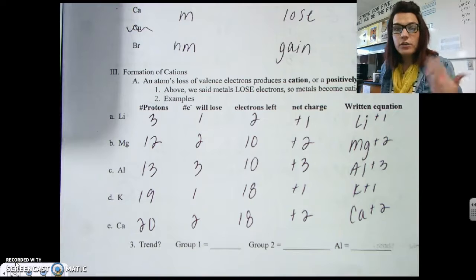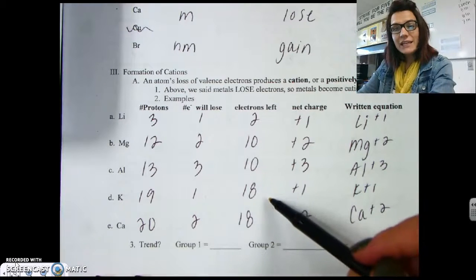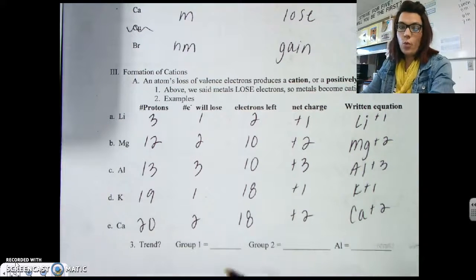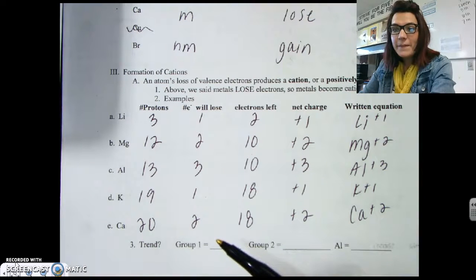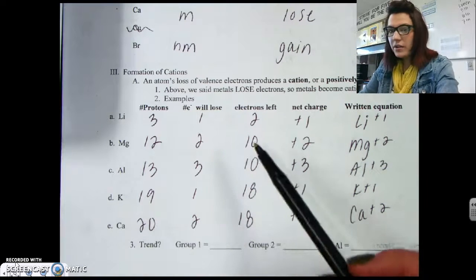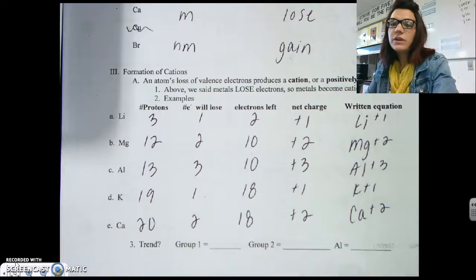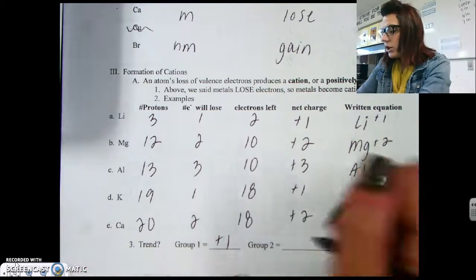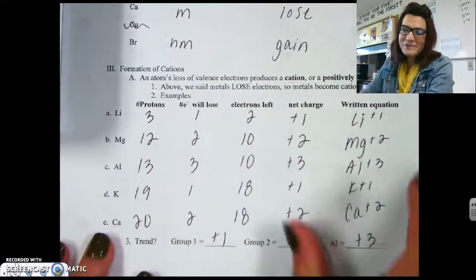Go ahead and try calcium and potassium. We can see a trend here. Potassium will lose one electron, giving it 18 electrons with a plus one charge. Lithium and potassium both have plus one charges because they're in group 1. Recall from Bohr models the electron arrangement goes 2, 8, 8, totaling 18. Group 1 will be our plus one charge, group 2 will be plus two, and aluminum is plus three.